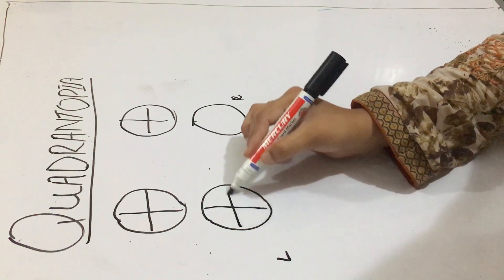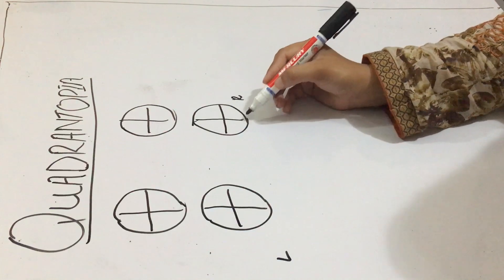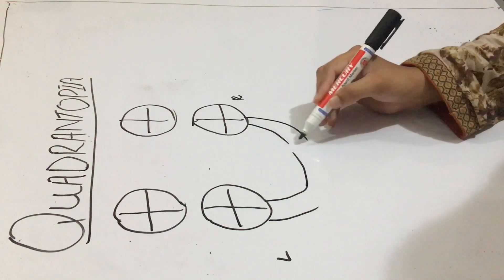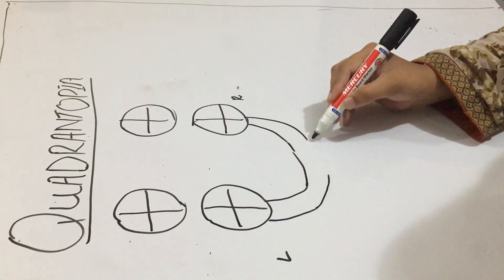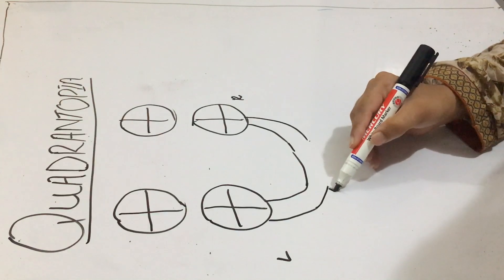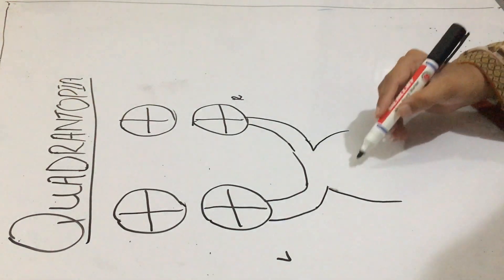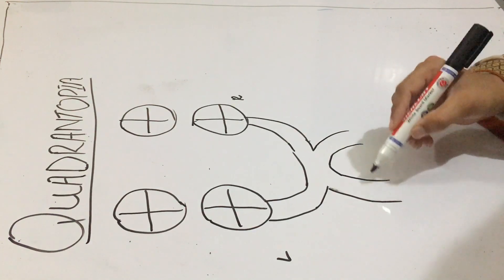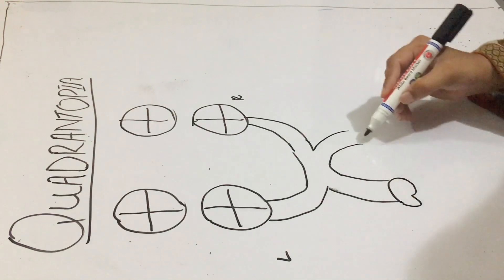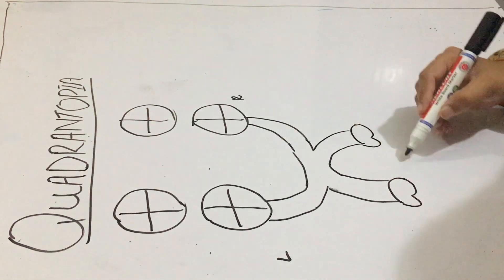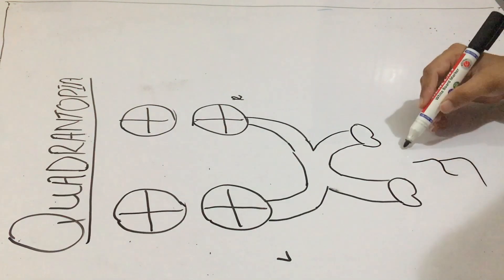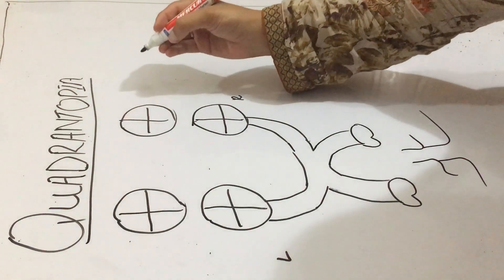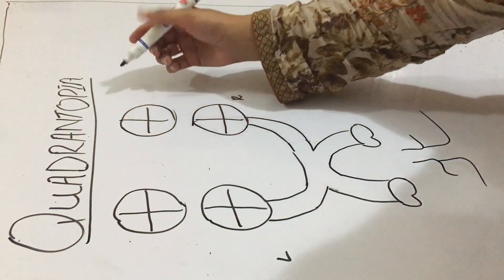I divide it into the quadrants to make it easy. From the eye emerges the optic nerve, which then divides and forms the optic chiasm. Then it terminates into the optic tract and then the lateral geniculate body, and then the visual cortex.